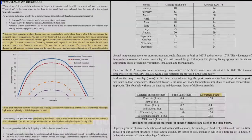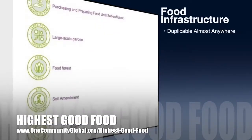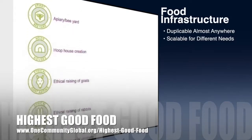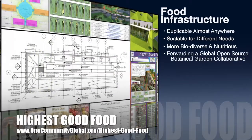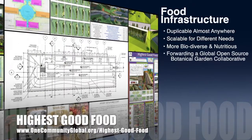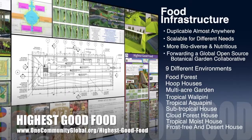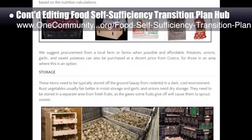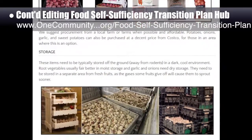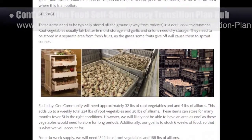One Community's approach to highest good food is duplicable almost anywhere, scalable for different needs, more biodiverse and nutritious, part of forwarding a global open source botanical garden collaborative, and includes nine different free shared and duplicable growing environments. This week the core team continued editing the food self-sufficiency transition plan hub page and the food bars page, and conducted research and procurement for root vegetables.